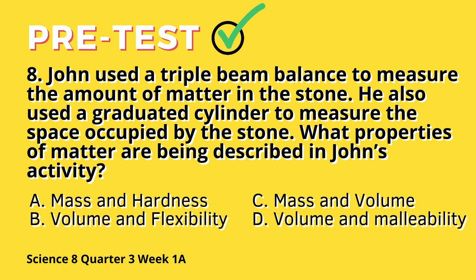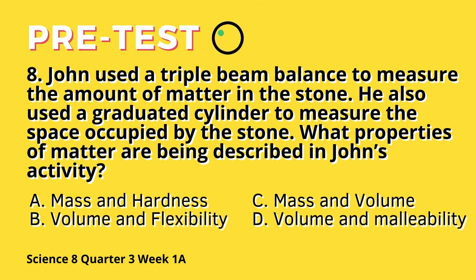Question 8: John used a triple beam balance to measure the amount of matter in the stone. He also used a graduated cylinder to measure the space occupied by the stone. What properties of matter are being described in John's activity? A. Mass and hardness. B. Volume and flexibility. C. Mass and volume. D. Volume and malleability.